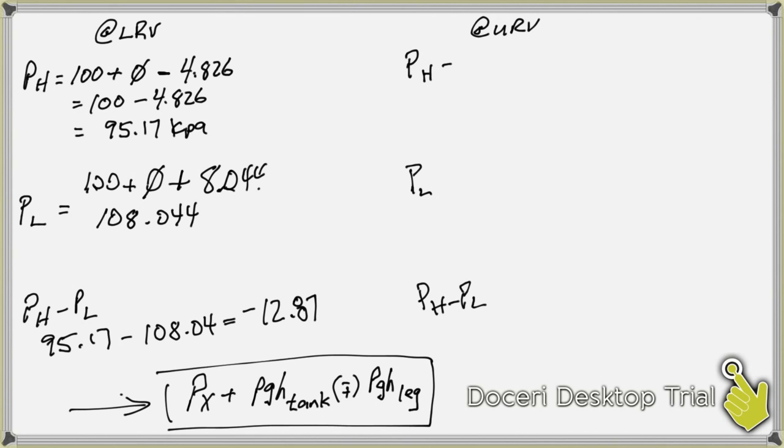Same thing now doing it with the vessel at upper range value. So we're going to have still these things to deal with here: the pressure of the tank, the PGH contribution of the fluid in the tank, and the PGH contribution of the leg.